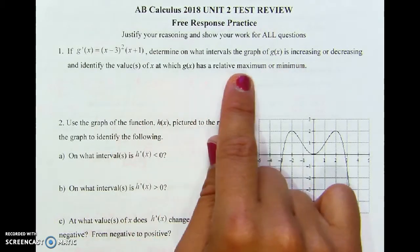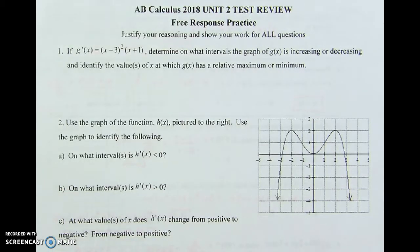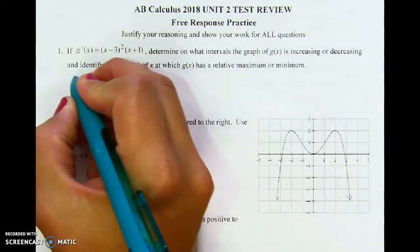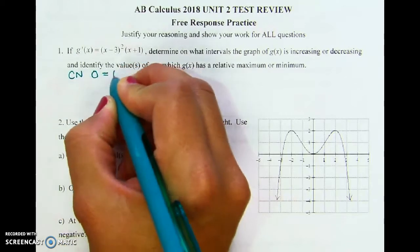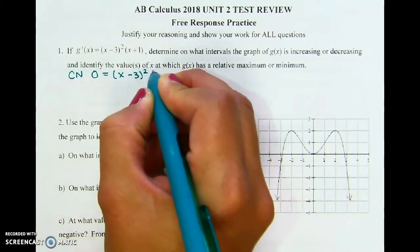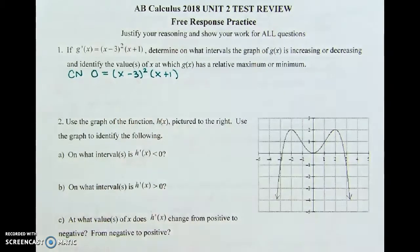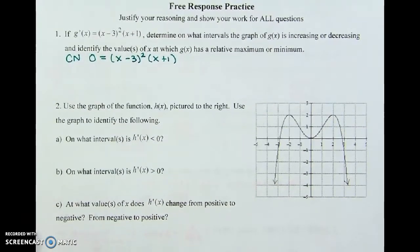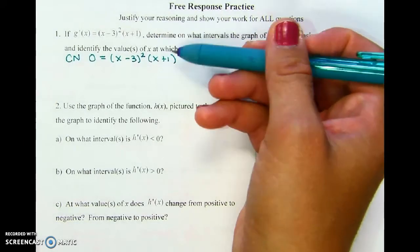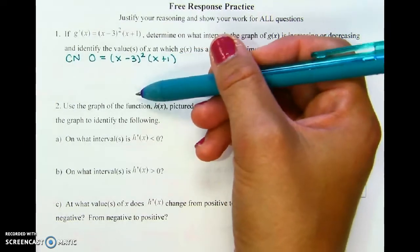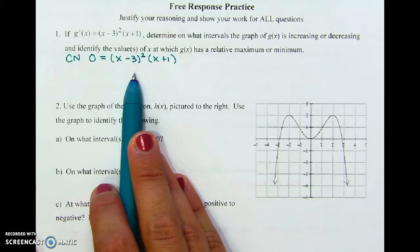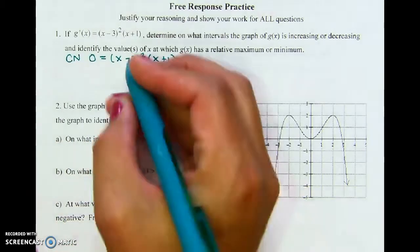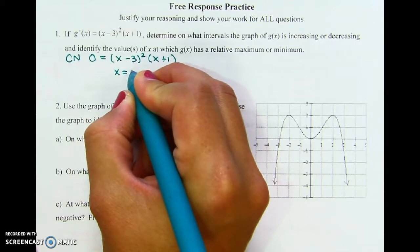Step one: find the critical numbers. Critical numbers come from when the derivative is set equal to zero. Usually when you find the derivative yourself, you have to factor to solve, but here the derivative is already given in factored form. So what are our critical numbers? x equals three and x equals negative one.